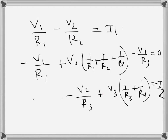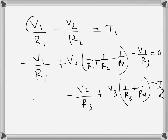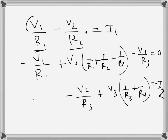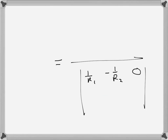To find V1 using Cramer's rule, I write the coefficient determinant as the denominator. The first row coefficients are: 1/R1, then minus 1/R2, and the coefficient of V3 in equation 1 is 0.